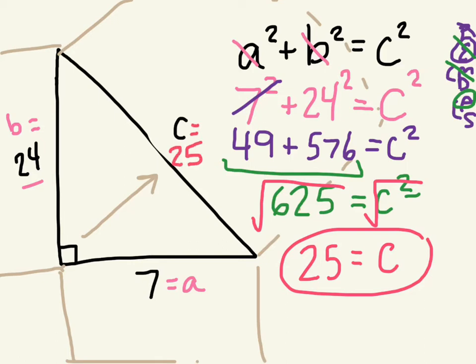So I have C equals 25, which means that this C right here will be 25. So I know that the lengths of my triangle, the side lengths, are 24, 7, 25.